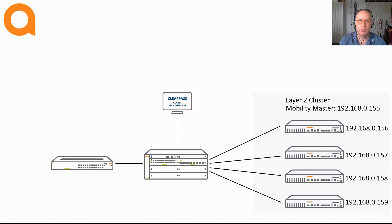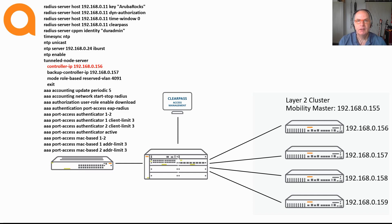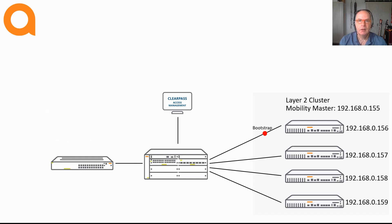I have also added multiple controllers that operate in a L2 cluster, so all controllers in this cluster are synchronized. The first step with user-based tunneling is to configure the switch for user-based tunneling. This mainly consists of configuring the primary and backup controller and setting the mode to role-based instead of port-based. Once you set the mode to role-based, the switch establishes a connection to the controllers — that initial connection is the control plane. The first step is that the switch sends a bootstrap message to the primary controller asking for establishing the control plane connection and for a list of cluster members.